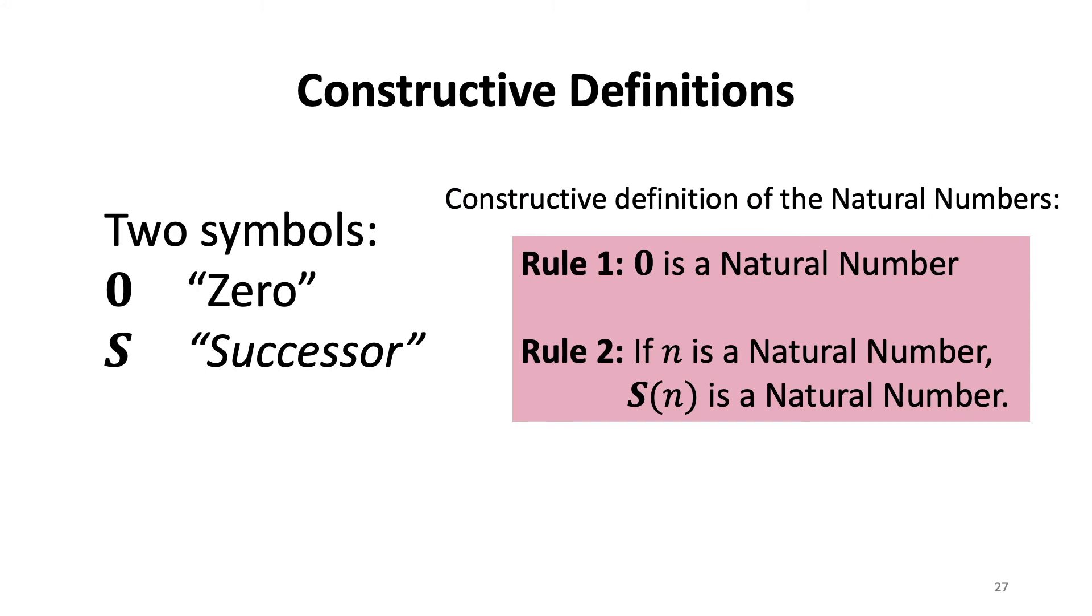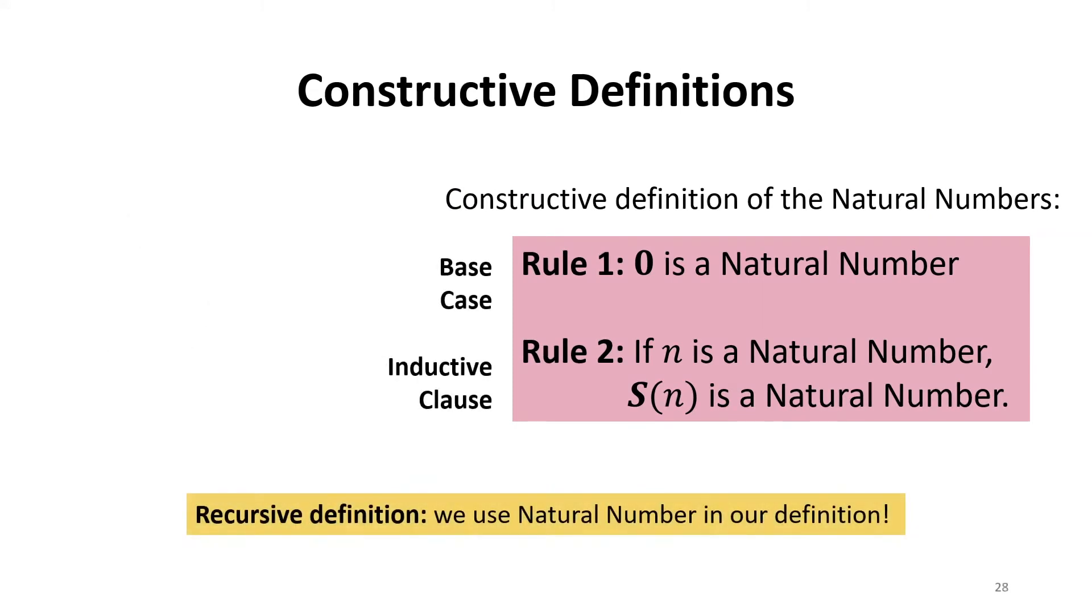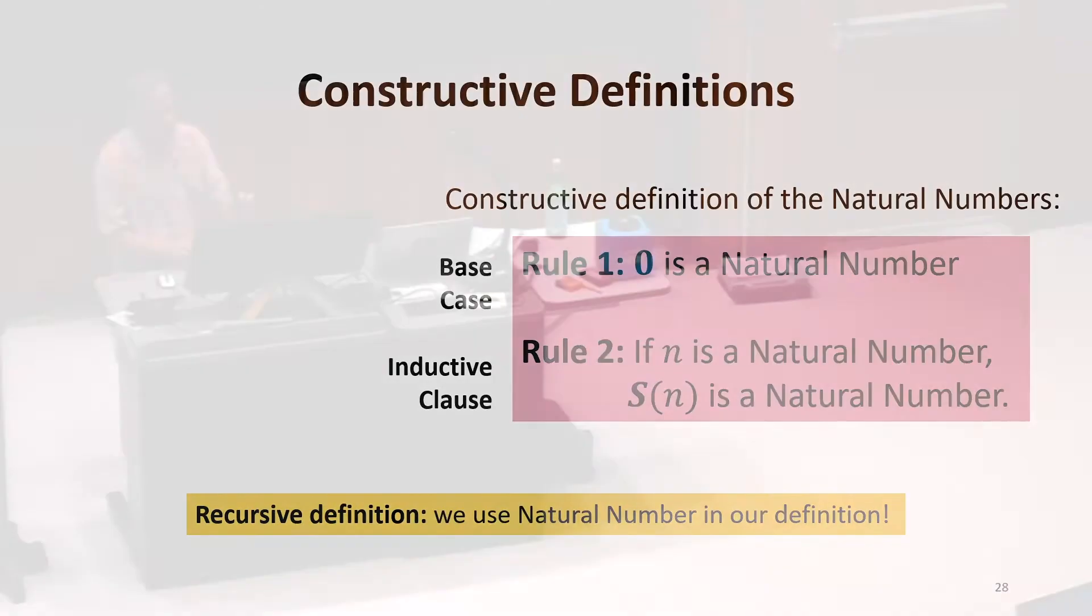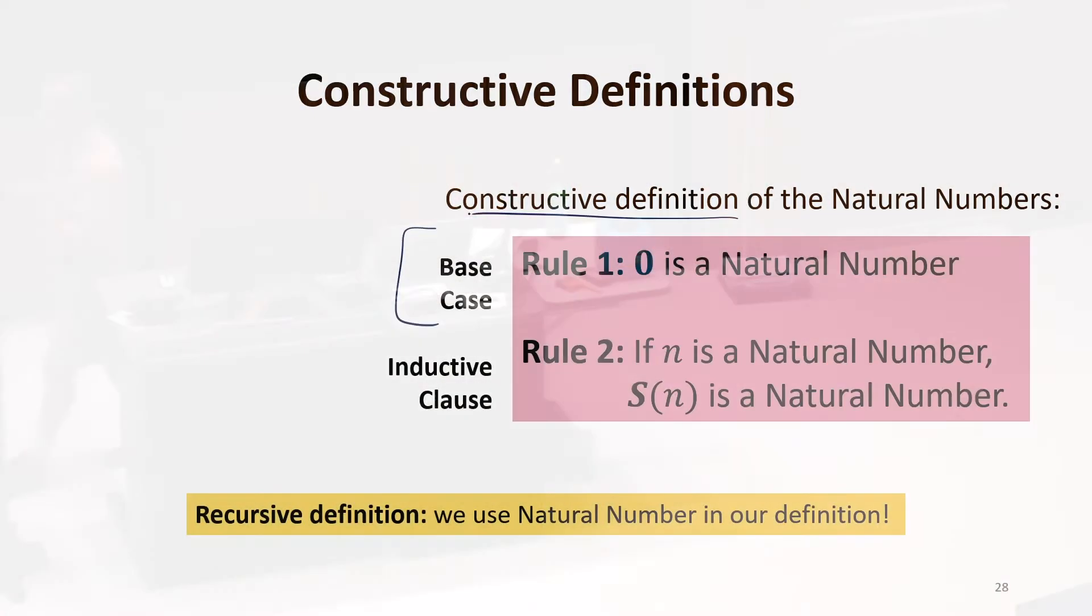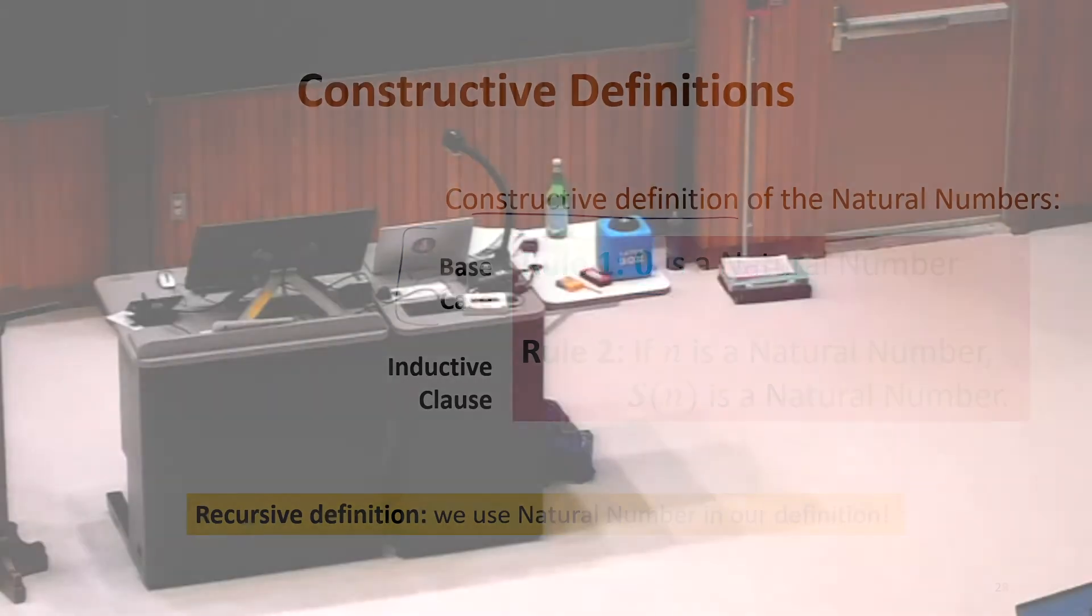So you've hopefully seen recursive definitions, at least in discrete math. And you've probably written recursive programs, which are in many ways like recursive definitions, in some ways quite different. We need a base case, right? This is why it's not a circular definition. We're not defining a natural number as a natural number. We're defining a natural number in terms of our base case, zero is a natural number.